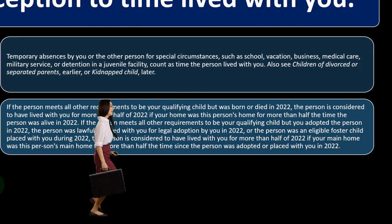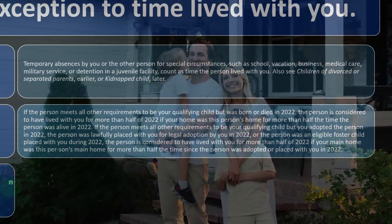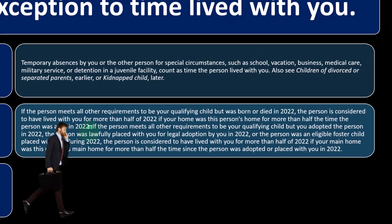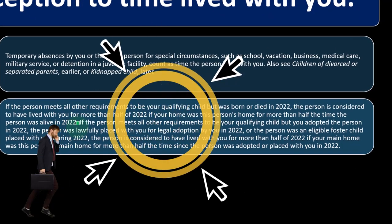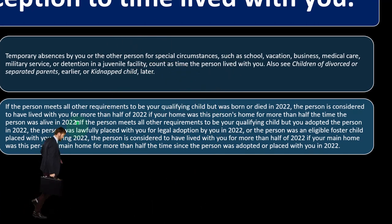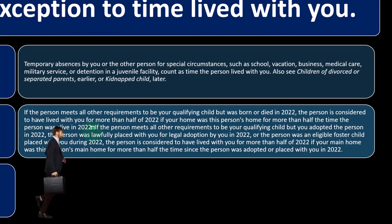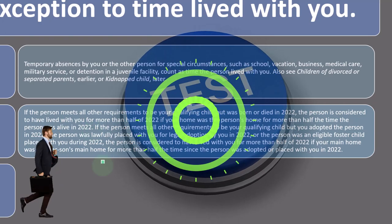If the person meets all the requirements to be a qualifying child but was born or died in 2022, the person is considered to have lived with you for more than half of 2022 if your home was this person's home for more than half the time the person was alive in 2022. So if someone tragically died partway through the year, the test applies to the time they were alive.